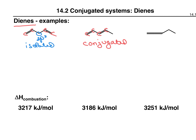The next one looks a little strange. This one is called a cumulated diene, where one carbon is common to two different alkenes. The two outer carbons are sp2 hybridized, but the central carbon is actually sp hybridized. So we have isolated, conjugated, and cumulated dienes.